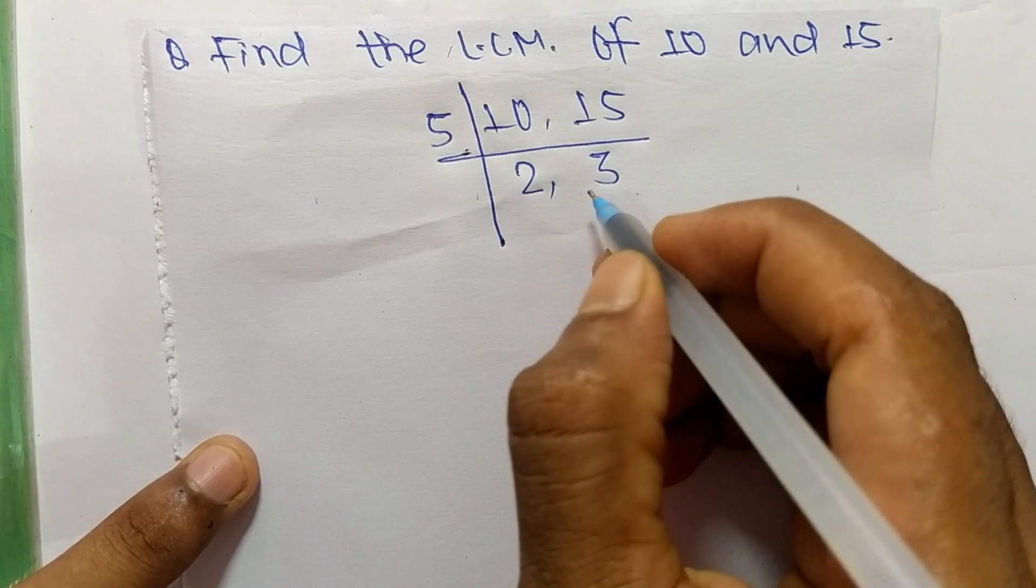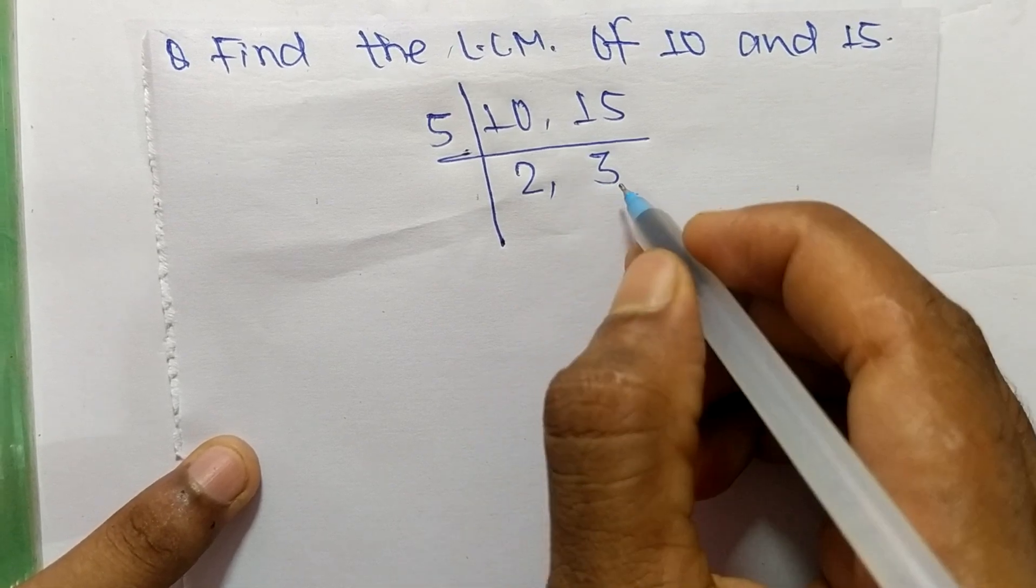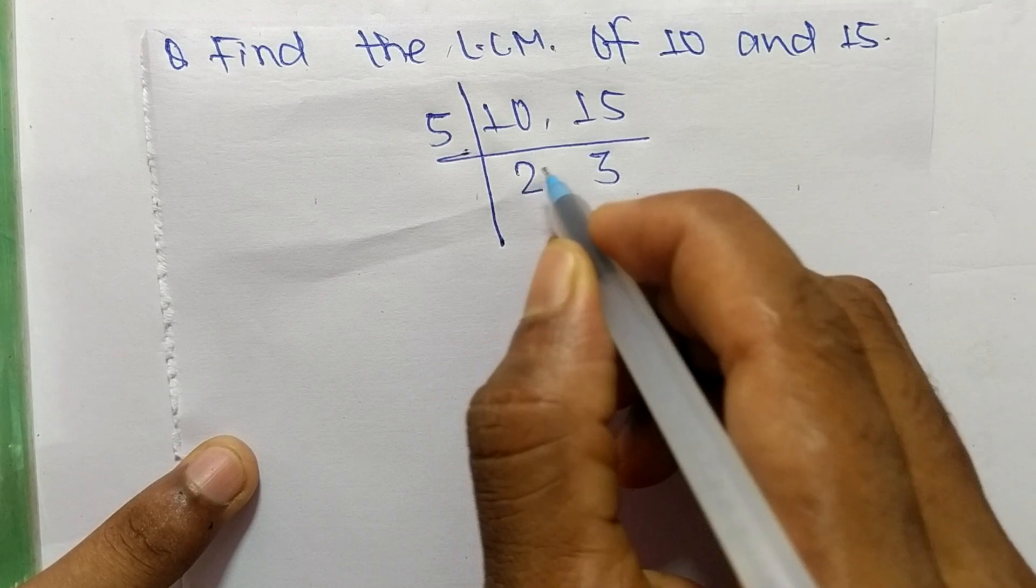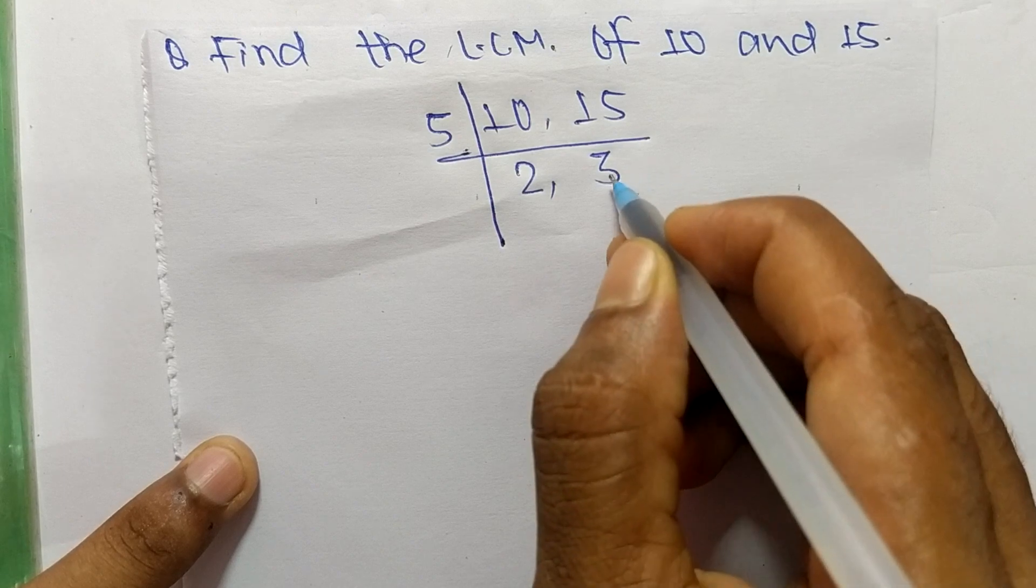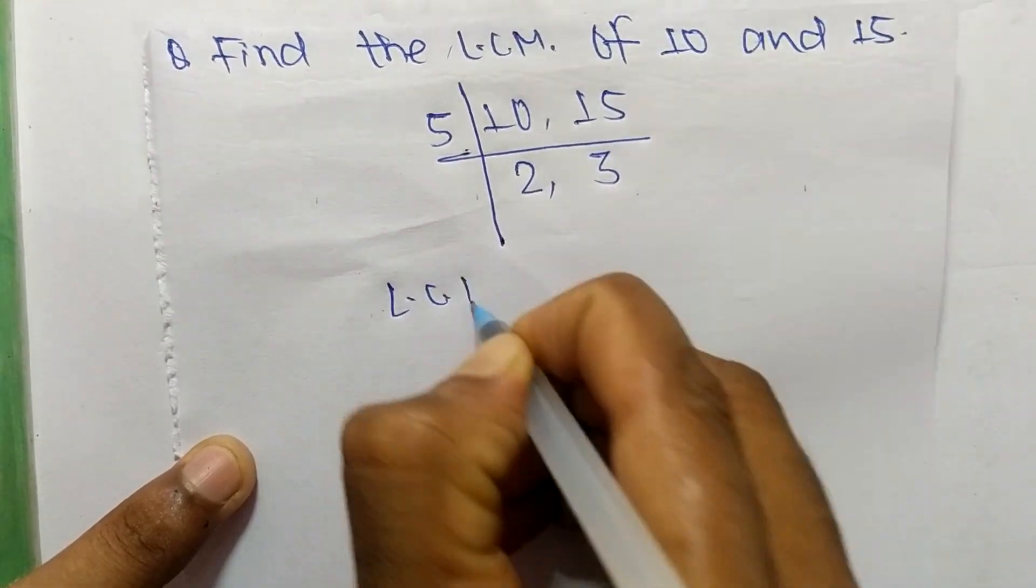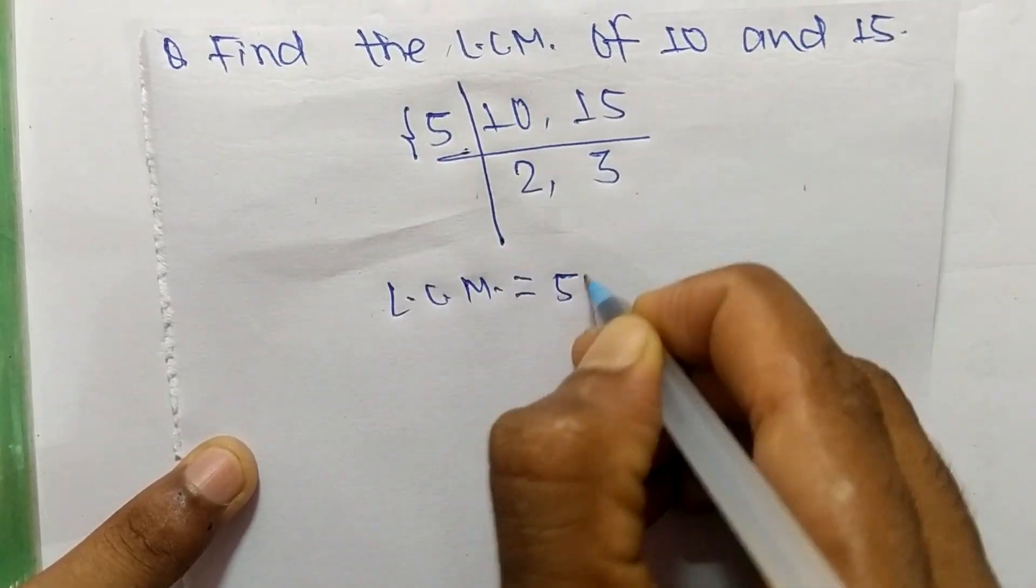So now we get here 2 and 3 which are not exactly divisible by the same number. So again we take here 2, then 2 can divide 2 but can't 3, and if we take 3 then 3 can divide 3 but can't 2. So its LCM is equal to, from this part it is 5.